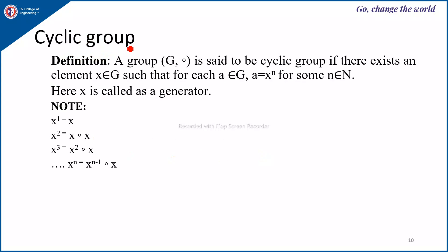Next is a cyclic group. A group G with composition is said to be a cyclic group if there exists an element X belonging to G such that for each A belonging to G, A can be written as X to the power of N for some positive integer N. Here X is called the generator. X power N is computed recursively: X power 1 is X, X power 2 is X composition X, X power 3 is X power 2 composition X, and X power N is X power N minus 1 composition X. This composition could be addition, subtraction, multiplication, or division — whatever the operation of the group is.